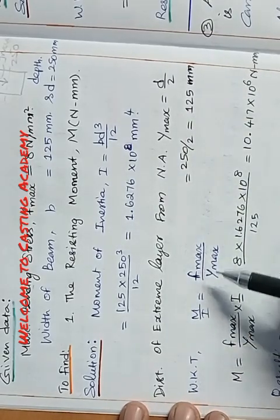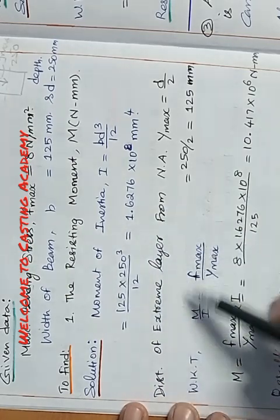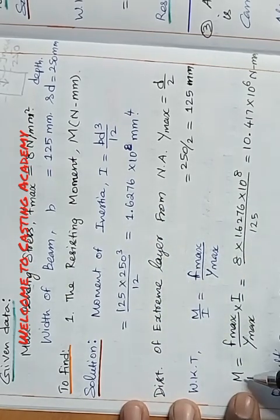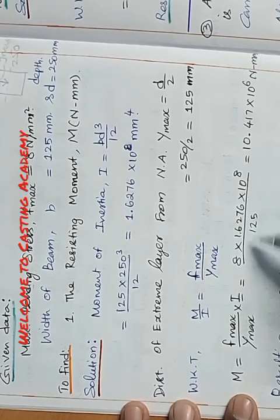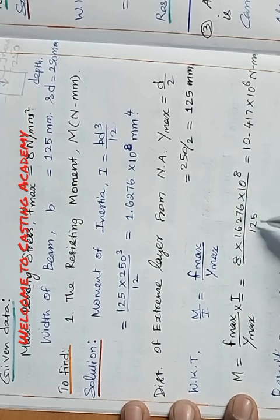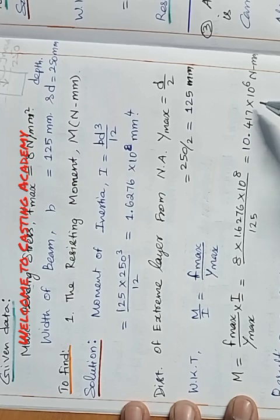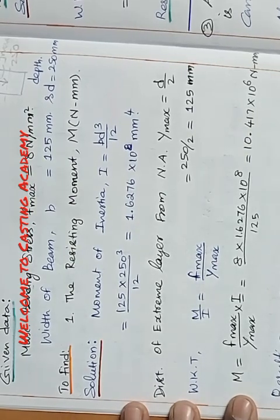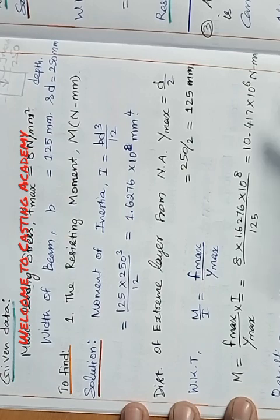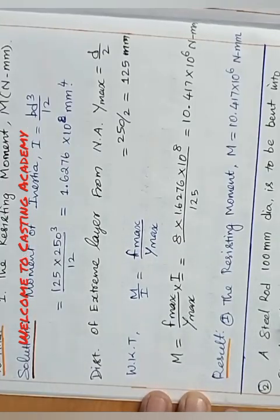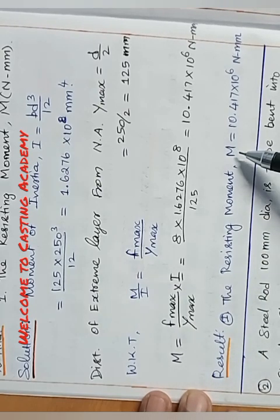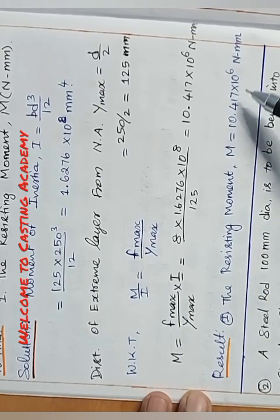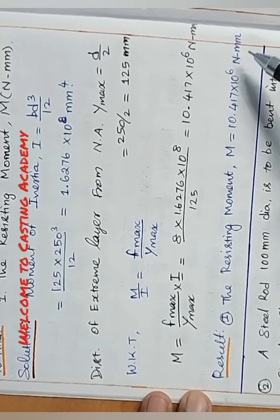Using M/I = Fmax/Ymax, we rearrange to M = (Fmax/Ymax) × I. Substituting: M = 8 × 1.6276 × 10⁸ divided by 125, giving 10.417 × 10⁶ Newton·mm. The final result: the resisting moment of the timber beam M equals 10.417 × 10⁶ Newton·mm.